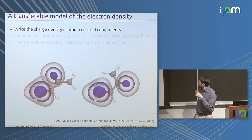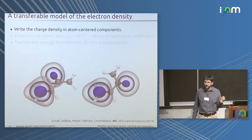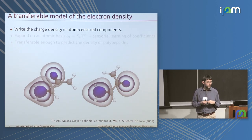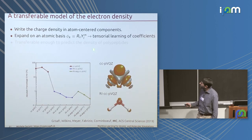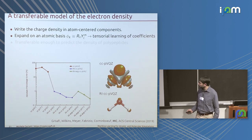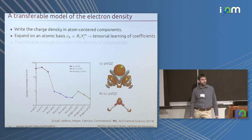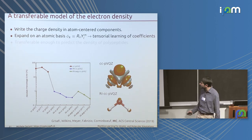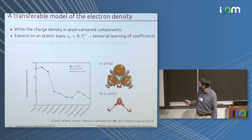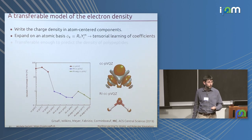Another property you might want to learn is the charge density. Our approach assumes you can decompose the total charge density into atom-centered components, each decomposed on radial functions and spherical harmonics. Choosing the basis function properly is crucial: using the same basis set as for the wave function is bad for decomposing the charge density; using the resolution-of-the-identity basis set works very well. Since the coefficients in this expansion transform like spherical harmonics, you need the tensorial machine learning framework.